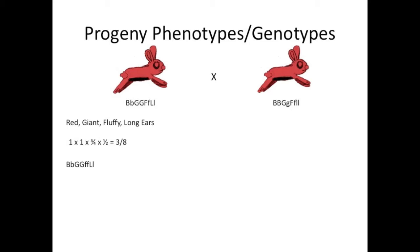Pause the video if you'd like to work out what fraction of offspring will have a specific genotype. Here's the answer: half will be heterozygous for color, half homozygous dominant for size, a quarter won't be fluffy, and half will be heterozygous for ear length — giving us 1 out of 32 offspring. Definitely learn this method, as the chart for dihybrids simply isn't viable for 4 traits — it would have 256 boxes. Do this method instead; it's much faster.